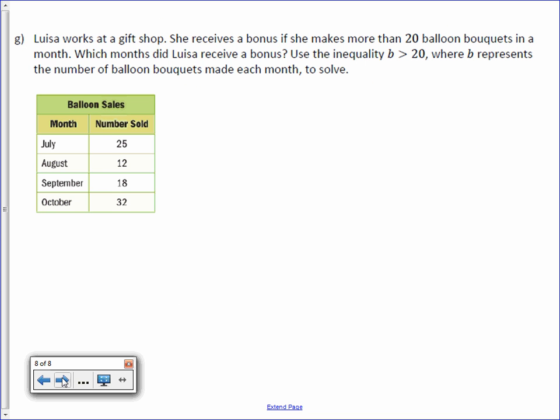Last problem. Louisa works at a gift shop. She receives a bonus if she makes more than 20 balloon bouquets in a month. Which months did Louisa receive a bonus? Use the inequality B is greater than 20, where B represents the number of balloon bouquets made each month to solve. So let's look at each month. We have B is greater than 20. Let's plug in each of these numbers.